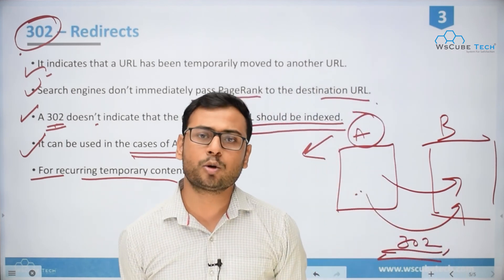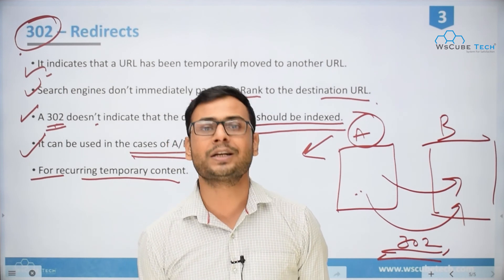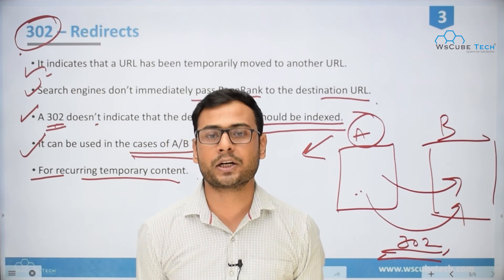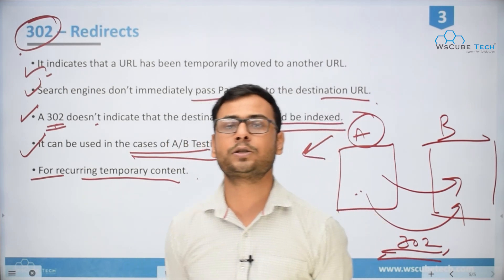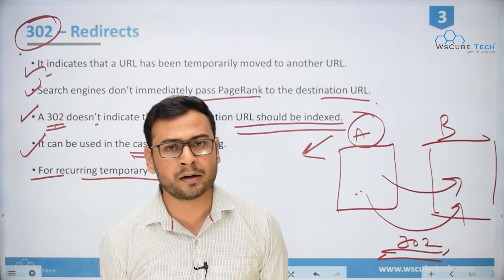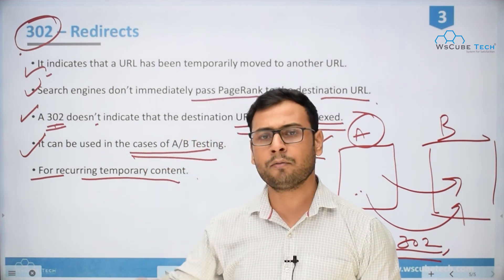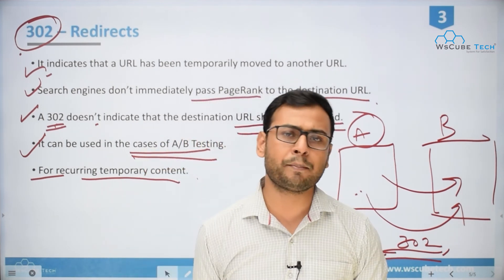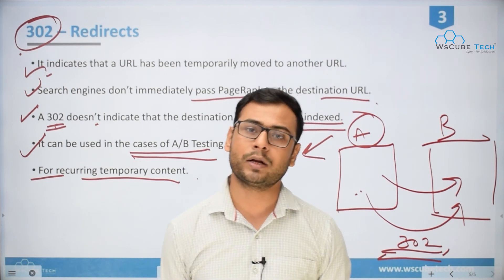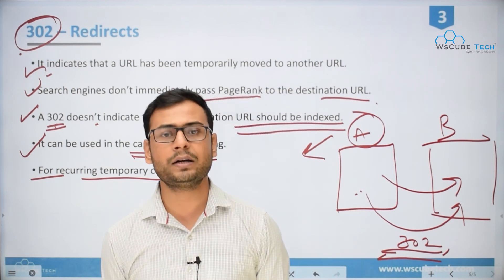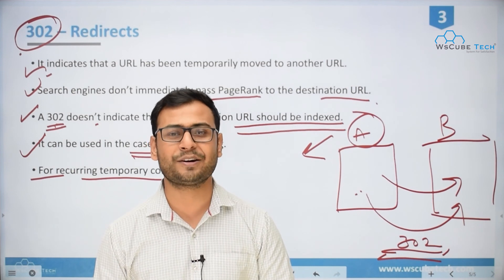So there are two kinds of redirections: 301, known as permanent redirection, and 302, known as temporary redirection. Both are implemented according to the situation and the needs. That's it for this video — see you in the next one. Goodbye.